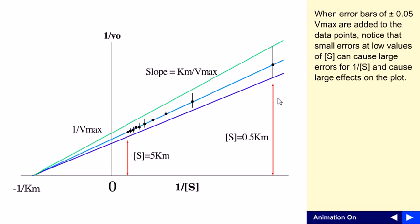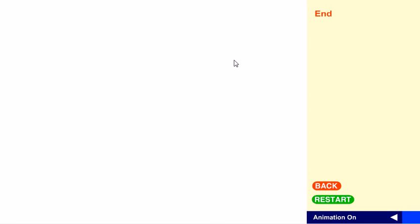This kind of information we can find using this Lineweaver-Burk plot. That is why it is really important for mathematical purposes, for study purposes, to measure the Km and the Vmax. Without measuring Km and Vmax, we cannot measure the catalytic efficiency of an enzyme or the turnover number of an enzyme.